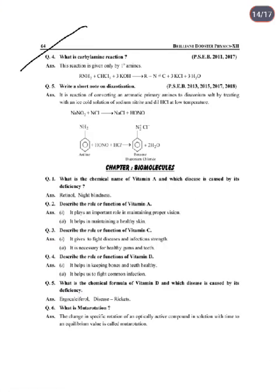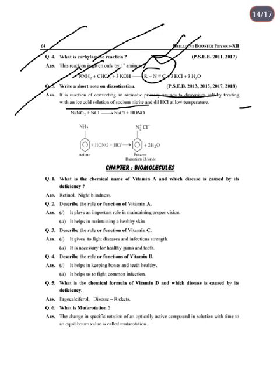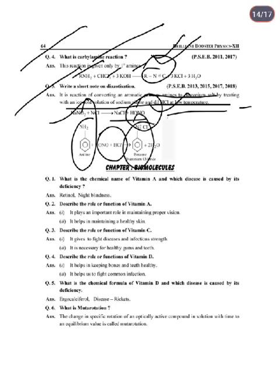Next: What is the carbylamine reaction? This reaction is given only by primary amines. Primary amine (RNH₂) reacts with chloroform (CHCl₃) and KOH to form isocyanide (RNC). This is called the carbylamine reaction. Next: Write a short note on diazotization. It is the conversion of an aromatic primary amine to a diazonium salt by treating with ice-cold sodium nitrite and dilute HCl. The nitrous acid formed reacts to give benzene diazonium chloride.